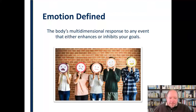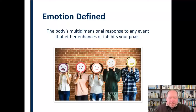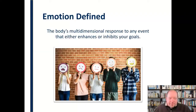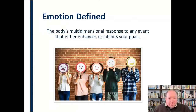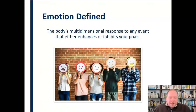To define emotion quickly: emotion is the body's multidimensional response to any event that either enhances or inhibits your goals. Keeping in mind that emotion is multidimensional — it's not just any one thing — it's both physical and psychological and all kinds of things. It's a response to a specific event, and it either enhances or inhibits our goals. Whether an emotion has a positive or negative valence really depends on whether it's helping us achieve our goal or inhibiting us from achieving one. So emotion is a little more complicated than we may initially expect.